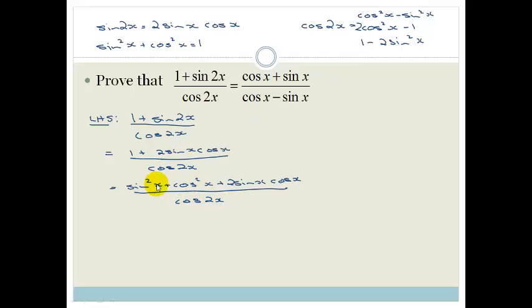Now do you see that this term here has got a sin x and a cos x on either side? So I'm going to rearrange it to become sin squared x plus 2 sin x cos x plus cos squared x all over cos 2x.